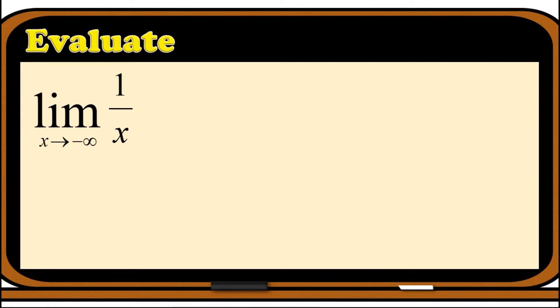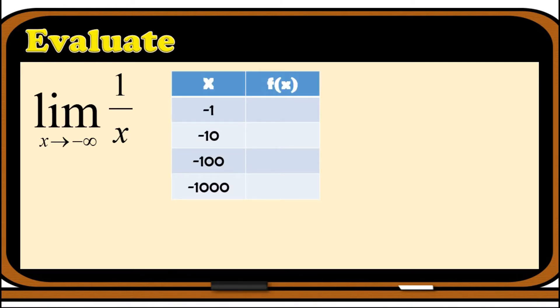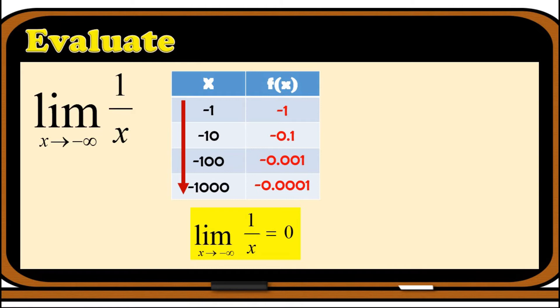Let's have another example: evaluate the limit of 1/x as x approaches negative infinity. This time we use negative values: -1, -10, -100, and -1000. Substituting each into the function gives: -1, -0.1, -0.01, and -0.001. As we approach negative infinity, the values of f(x) are getting closer and closer to zero. So the limit of 1/x as x approaches negative infinity is equal to zero.